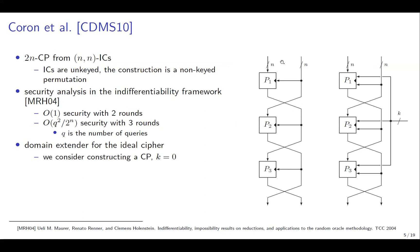This is the construction of Kolomon et al., which is a 2N-CP that uses N-NICs. Ideal ciphers are unkeyed because the key is one of the inputs, and the entire construction is a non-keyed permutation. Security was analyzed in the indifferentiability framework of Maura et al. With two rounds the construction is insecure, and with three rounds it achieves birthday bound security, where Q is the number of queries.